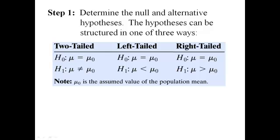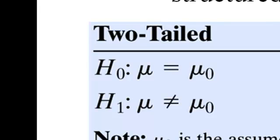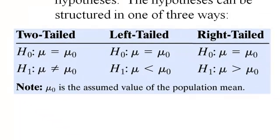First, we identify the null and alternative hypotheses. There are three options. Our null hypothesis is always H0: μ = μ₀. And then the alternative is either μ ≠ μ₀, or μ < μ₀, or μ > μ₀.